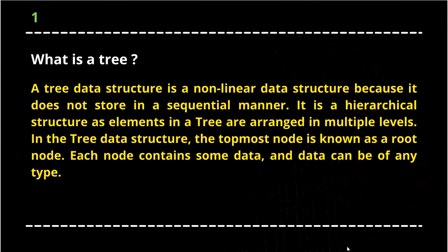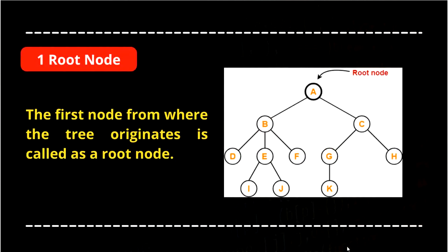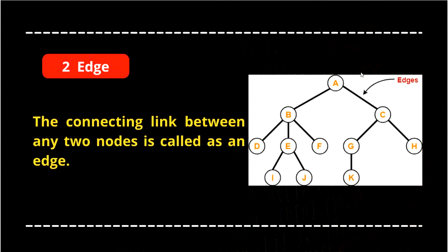We have to be masters with tree terminology to deal with tree data structures easily. There are up to 12 to 13 terminologies we have to learn. The first one is root node — the first node from where the tree originates is called the root node. In the example, from node A the whole tree originates, so A is known as the root node.